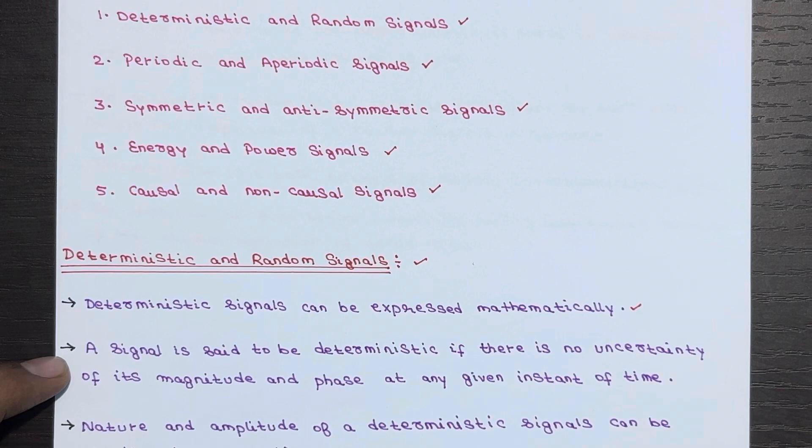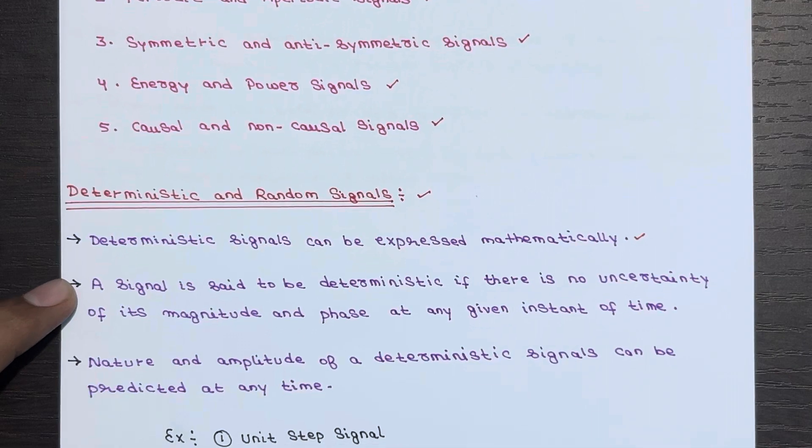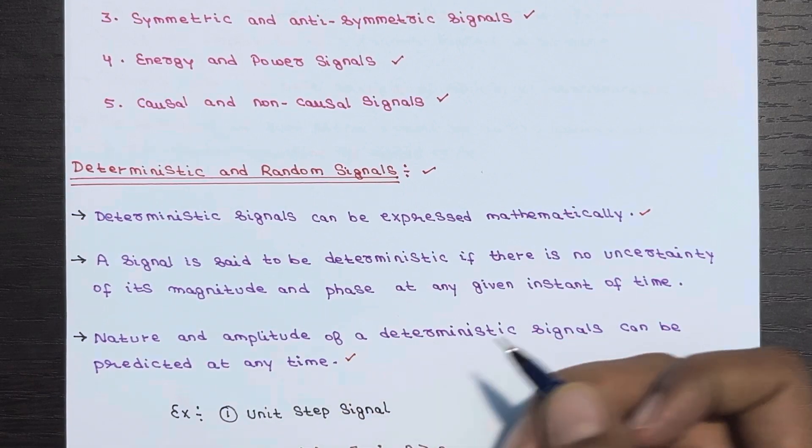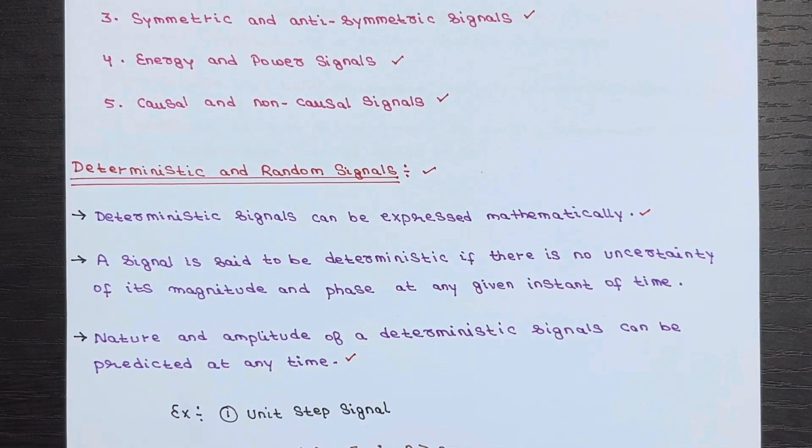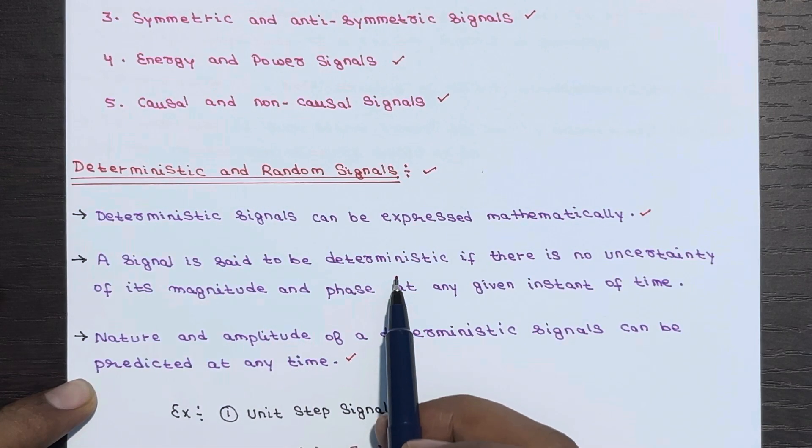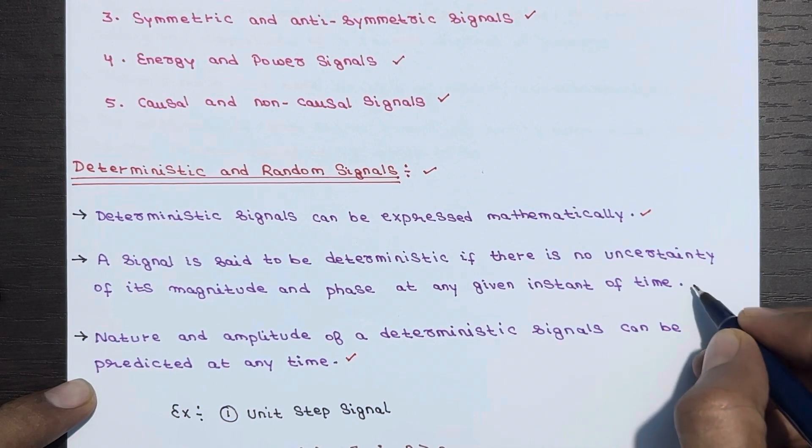They have no uncertainty in terms of their magnitude and phase at any given time. We can predict the nature and amplitude of deterministic signals at any time because we have the mathematical expression for that type of signals. A signal is said to be deterministic if there is no uncertainty of its magnitude and phase at any given instant of time.